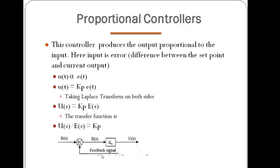Kp is a simple gain — some value like 5, 10, or whatever, depending upon the problem. It will multiply the error and produce the control action. It magnifies the error and gives commands to the final control element.